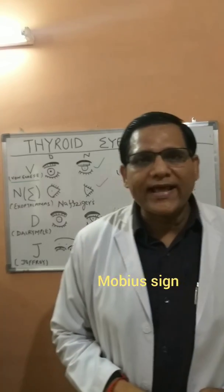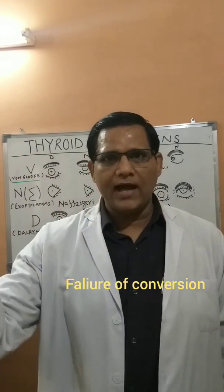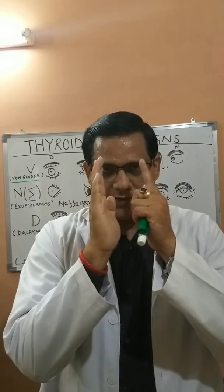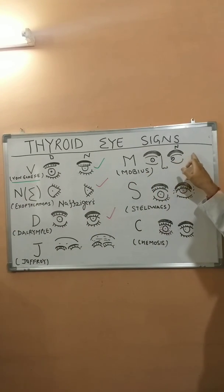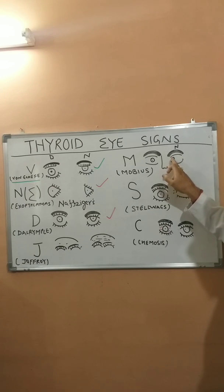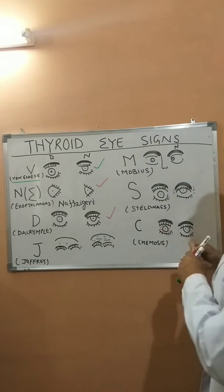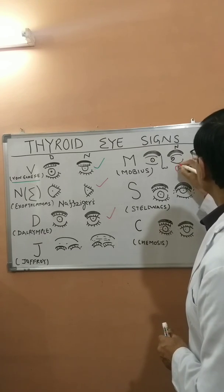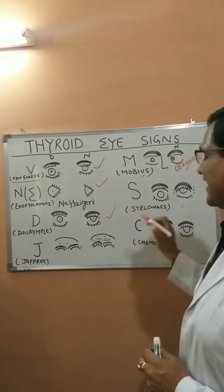The next sign is Möbius sign. What occurs in Möbius sign is failure of convergence. If you put your finger out and bring it toward the center, asking the patient to converge both eyeballs, there will be failure of convergence. In this figure you can see that normally the eyeball can come up to the medial aspect, but in this case there is failure to move the eyeball — convergence is absent. That is Möbius sign.